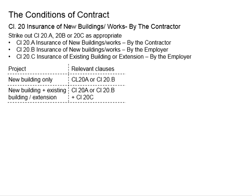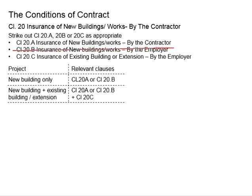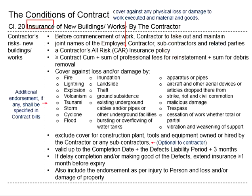Now let us look into the details of Clause 20. Clause 20A relates to the insurance of buildings or works by the contractor, and is applicable when Clause 20B has been struck out. The clause requires the contractor to take up and maintain insurance before the commencement of work, in the joint names of the employer, contractor, subcontractors, and related parties. This insurance will be the Contractor's All Risk insurance.